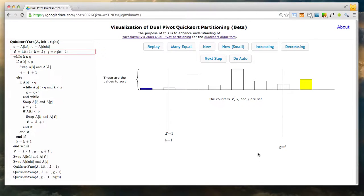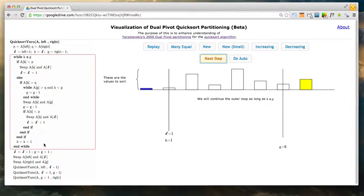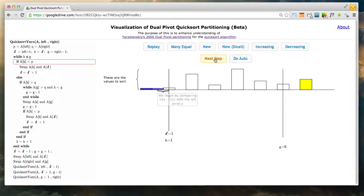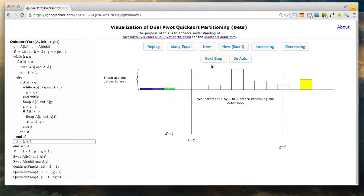It sets these counters. It makes a note about the main loop we're going to be going through and starts the process. Comparing A[K] to the left pivot. In this case, it's bigger than the left pivot so it jumps to the else. Comparing A[K], which is A[1] in this case, to the right pivot. Here it's in between, marks it as green, moves back, and increments the counters.